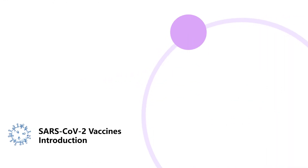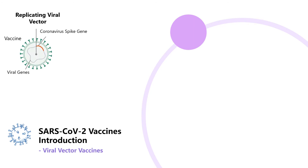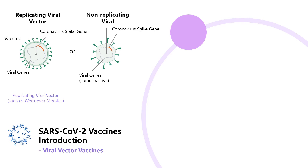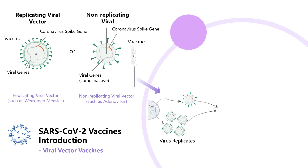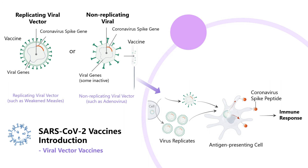The second category is viral vector vaccine. Viral vector vaccines graft antigen genes to non-pathogenic or weakened viral vectors, and then enter the body to induce immune responses. This kind of vaccine includes replicating virus vector vaccines, such as weakened measles, and non-replicating virus vector vaccines, such as adenovirus. The newly approved Ebola vaccine is an example of a viral vector vaccine that replicates in cells.